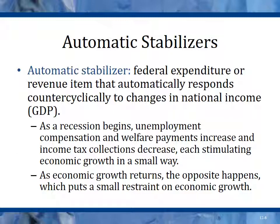Automatic stabilizers are federal expenditures or revenue items that automatically respond counter-cyclically to changes in national income. When the economy starts to get worse, unemployment and welfare and food stamps increase, and income tax collections decrease because people are making less money in a recession. People making less money will pay a lower tax rate or not pay income tax at all if they have no income. As economic growth returns, the opposite happens, which puts a smaller strain on economic growth.